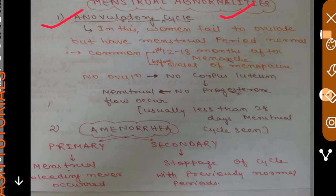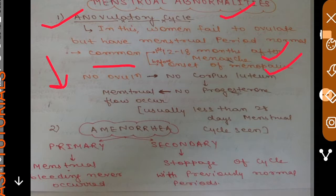In many cases, the time period of the menstrual cycle will decrease. This is more common in the first 12 to 18 months after menarche — the first menstrual cycle is known as menarche. It also occurs before the onset of menopause. These are the two periods in which an anovulatory cycle is commonly seen. If there is no ovulation, there will be no formation of corpus luteum.